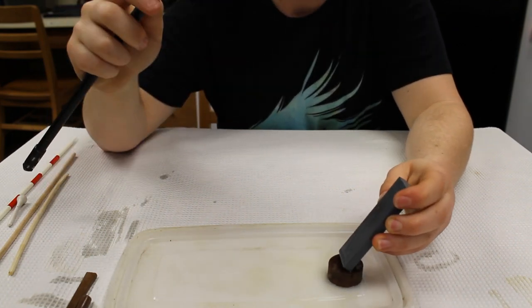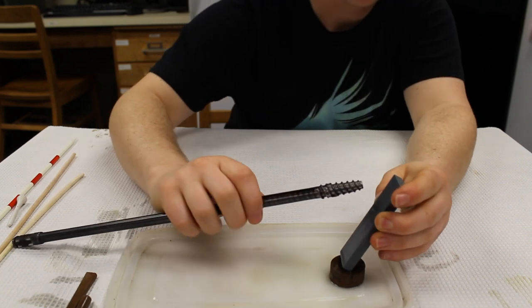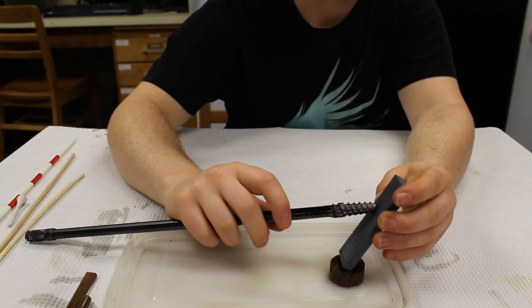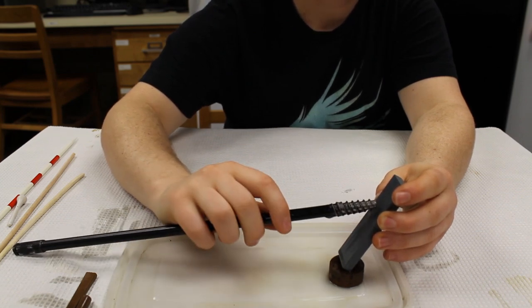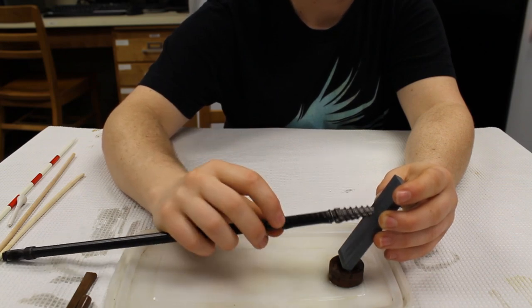So you balance your block at maybe a 45 degree angle. And then line it up with the outside of the very tip of the bit. So the borer, you just move in half circular motions.